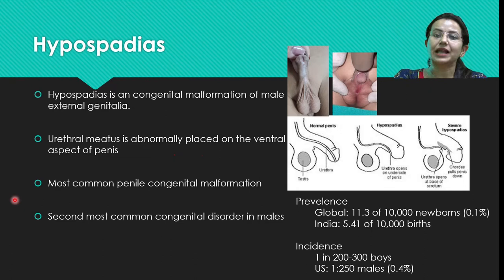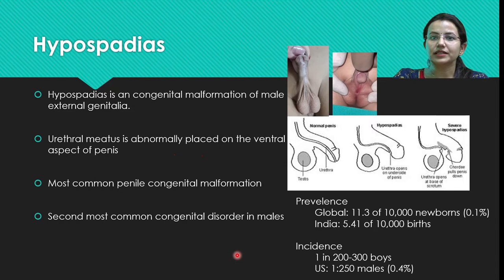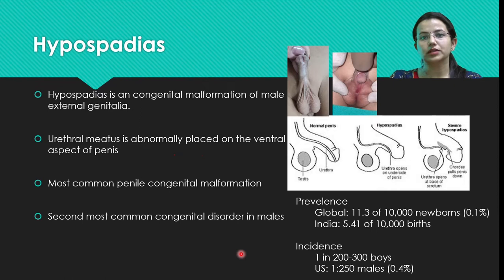Hypospadias is the most common penile congenital malformation in boys and the second most common congenital anomaly in males. The prevalence is 0.1% of all newborns and the incidence ranges from 1 in 200 to 300 boys.